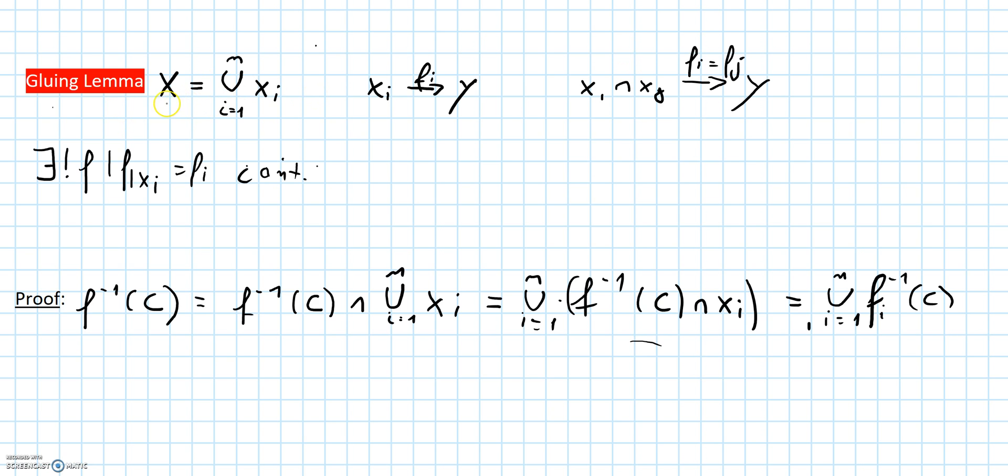There exists a function f which is just fi when restricted to xi for each i and which is continuous on all of X. So it is clear how f is defined pointwise - it is just fi on the xi, and since the xi cover big X, f is defined everywhere.